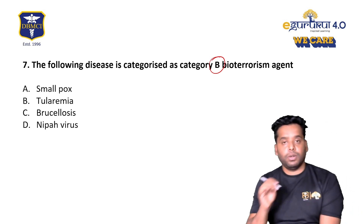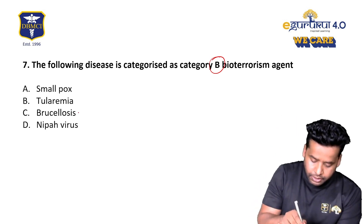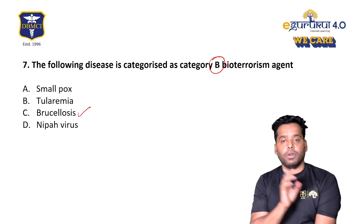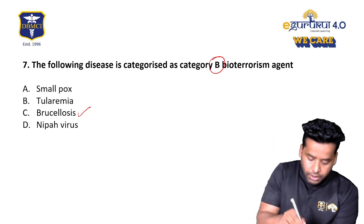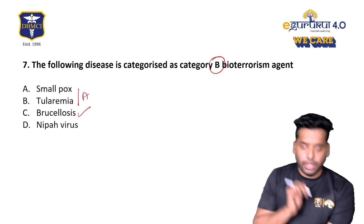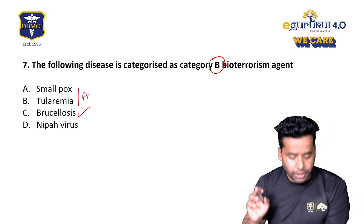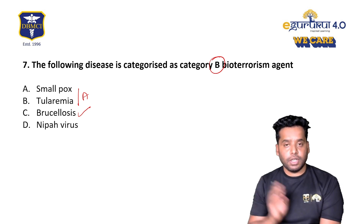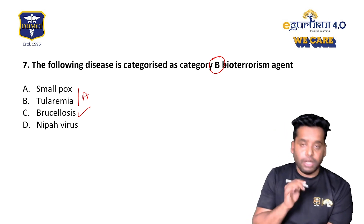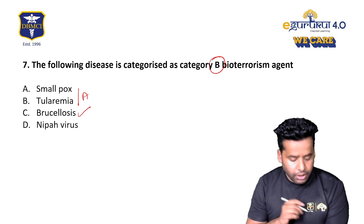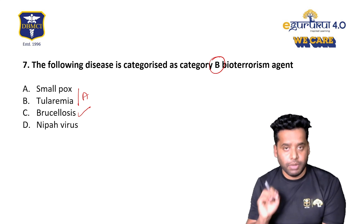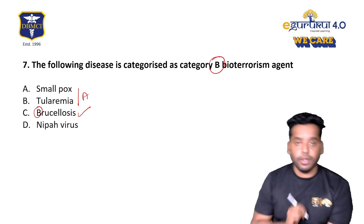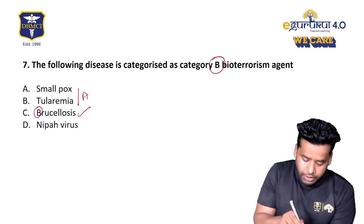Which of the following is classified as a Category B bioterrorism agent? Answer: brucellosis. Category A includes smallpox, tularemia, anthrax, and plague. Brucella falls under Category B. Along with that, remember Coxiella burnetii (Q fever) is also Category B — 'B for Brucella, B for Burnetii.'